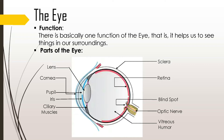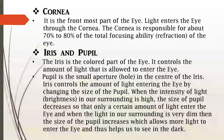Different parts of the eye are: cornea, pupil, iris, lens, ciliary muscles, retina, sclera, vitreous humor, and optic nerve.